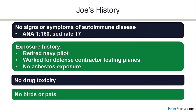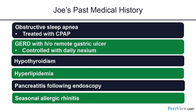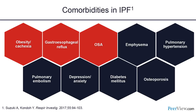Chronic hypersensitivity pneumonitis from bird exposure should be excluded; pneumotox.com is helpful for drug toxicity. Joe had no signs of autoimmune disease — his ANA was 1:160 but never developed into a diagnosable condition. He was a retired Navy pilot with no significant inhalational exposures such as asbestos. No drug toxicity, no bird exposure. His comorbidities notably include obstructive sleep apnea and reflux.